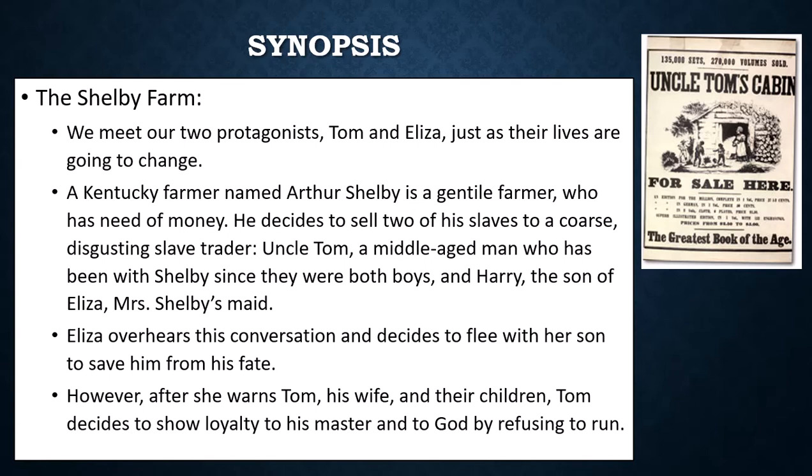Let's get into the actual text. We begin at the Shelby Farm, where our initial scene is set, and we have two protagonists: Tom and Eliza, just as their lives are going to change. A Kentucky farmer, Arthur Shelby, described as a country gentleman, has some need of money and decides to sell two of his slaves to a coarse, disgusting slave trader. The slave trader is painted as almost worse than Arthur Shelby, but they're two sides of the same coin — both part of the problem.